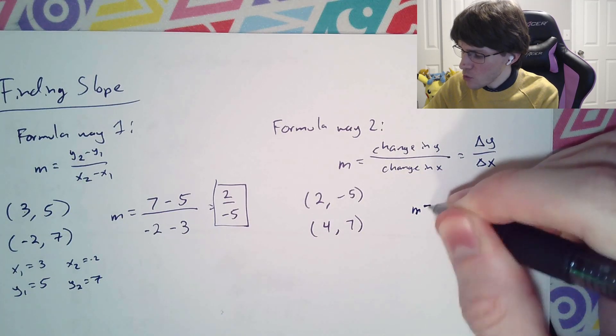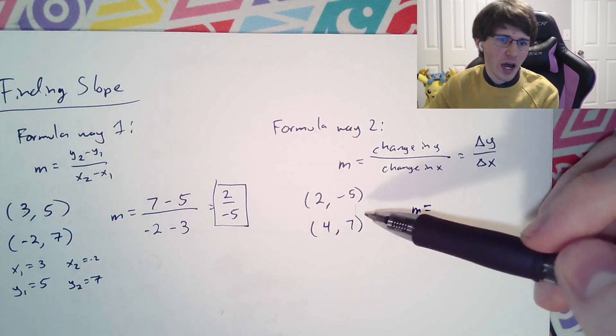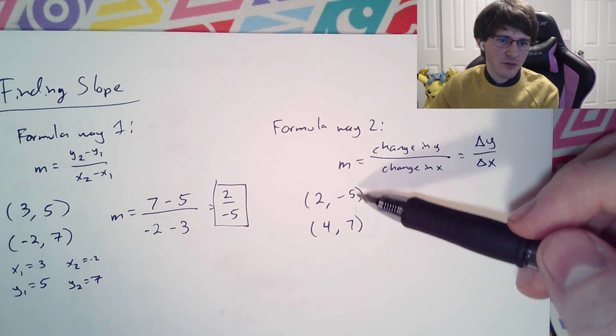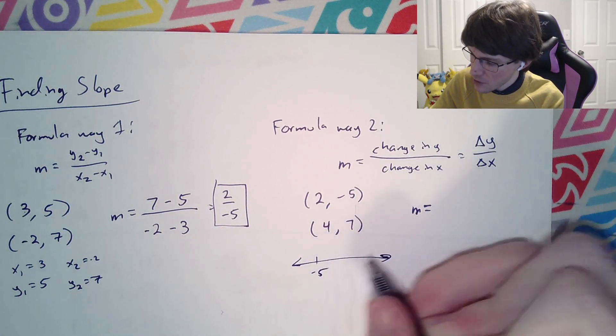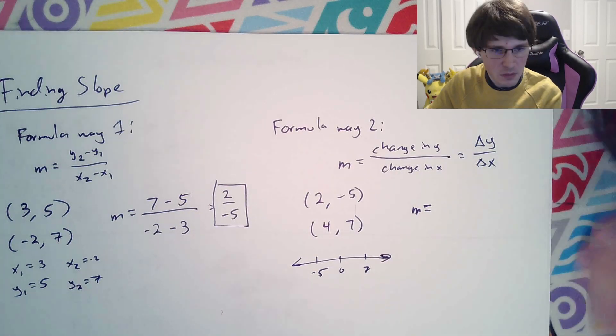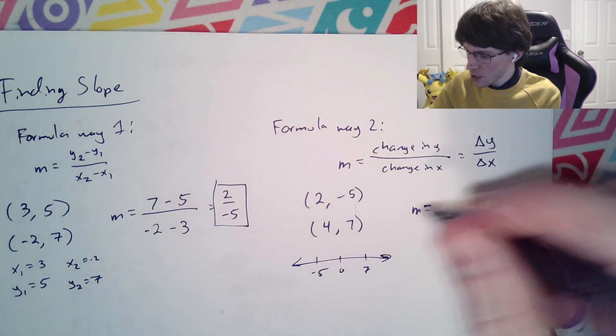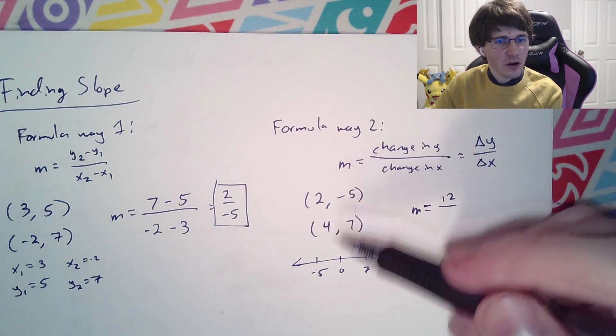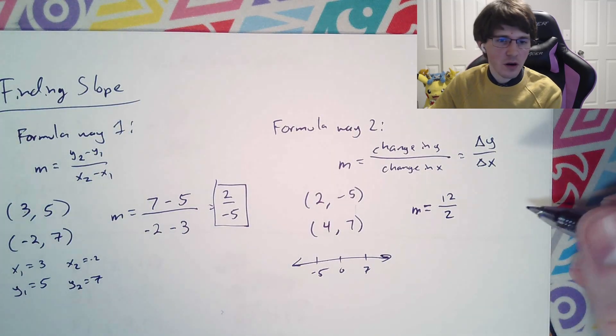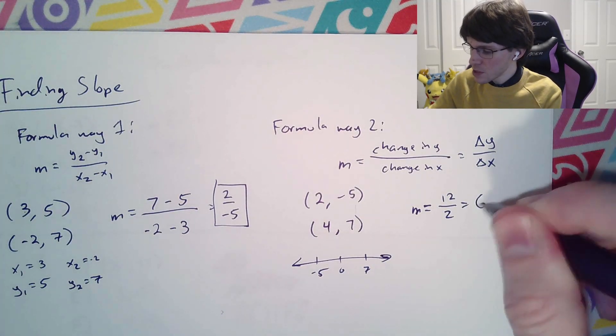What we can do is say, what is the difference between these two? How far is it on a number line from negative 5 to 7? If you're thinking, here's my number line, I have a negative 5 here and a 7 over here and a 0 in the middle, how far is that? Well, definitely 12 apart there. Likewise, how far are 2 and 4? 2 and 4 are 2 apart, and therefore the slope is 6.